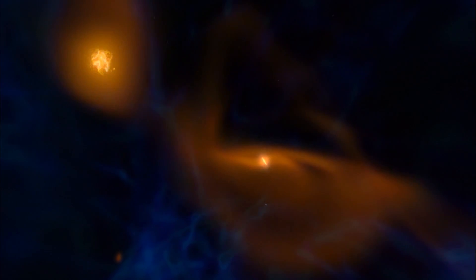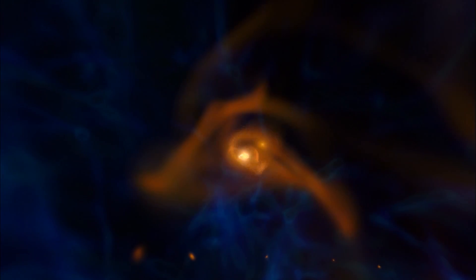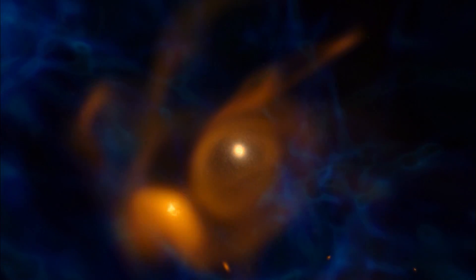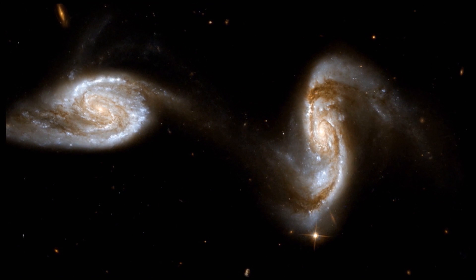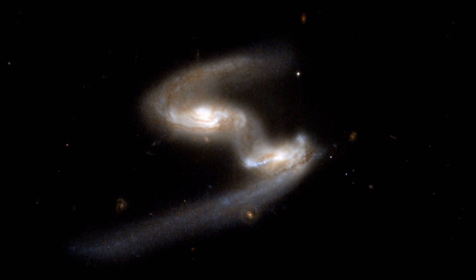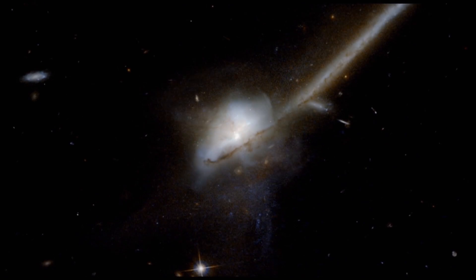This simulation shows how a galaxy like our own might have taken shape in a flurry of mergers and collisions. In the beginning, gravity drew patches of stars and gas together. A new, larger patch drew still others. In fact, the universe is littered with galaxies in the process of ripping each other apart and crashing together.